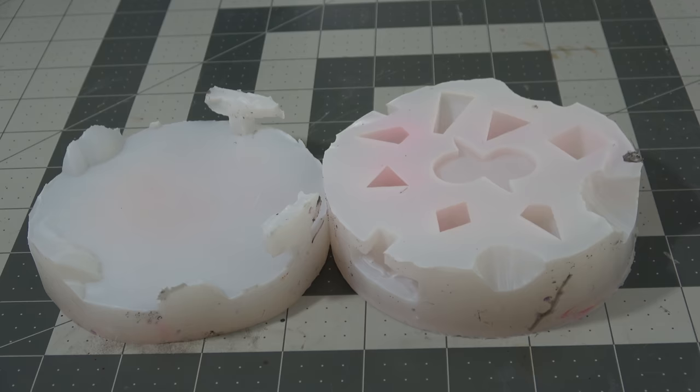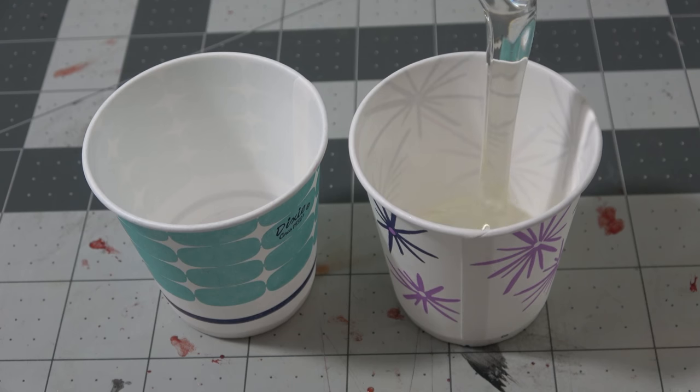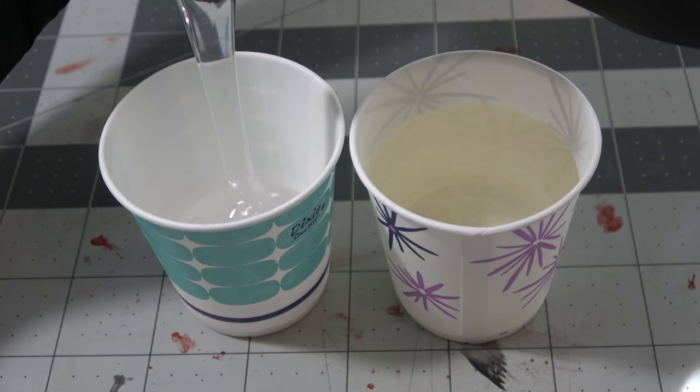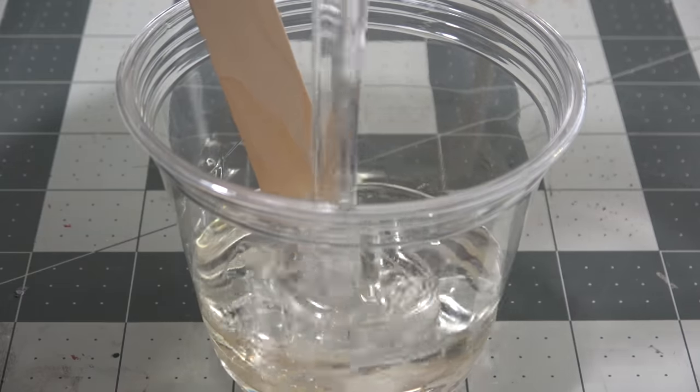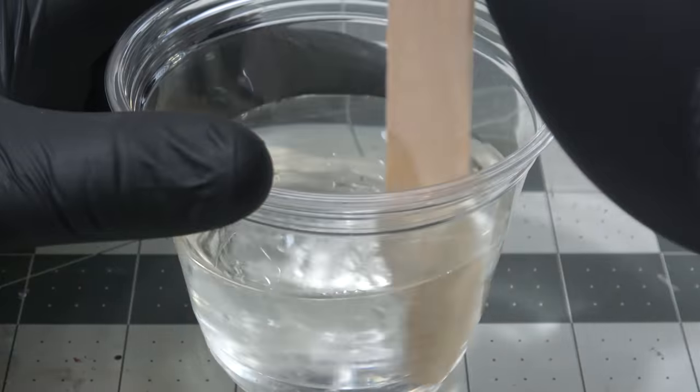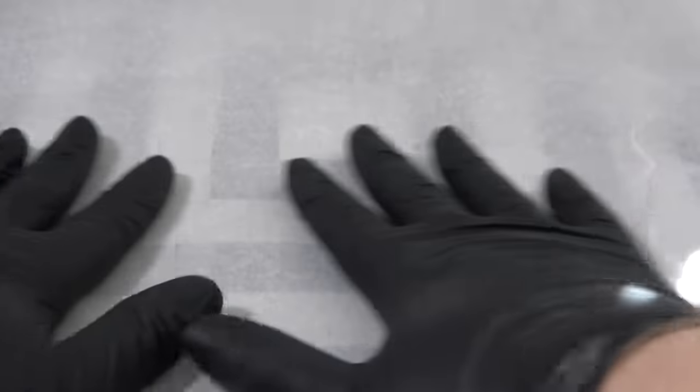For now we're going to take our dice molds and start mixing up some resin to put inside of them. We don't really have anything special to do with this resin, it's a 1 to 1 by volume mixture resin for Envirotex light resin, but we need a solid surface on which to make our gradient.